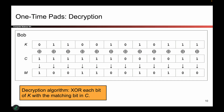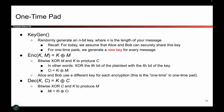That's the one-time pad definition. The key generation is to randomly generate a key. One thing different from later schemes is that you need a different key for every message — every time you want to encrypt something, Alice and Bob need to regenerate a new key that has not been used before. The encryption algorithm is simply a bitwise XOR of the key and message. Decryption is also a bitwise XOR of the key and ciphertext.